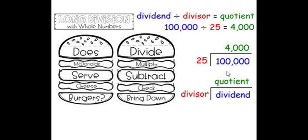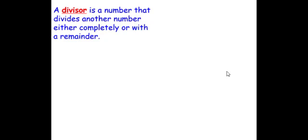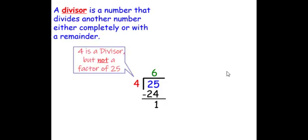Nothing can stop you, so just listen. A divisor is a number that divides another number either completely or with a remainder. So when we take a look at 25 divided by 4, 4 goes into 25 6 times, 6 times 4 is 24, 25 minus 24 is 1. 4 is a divisor but not a factor of 25.